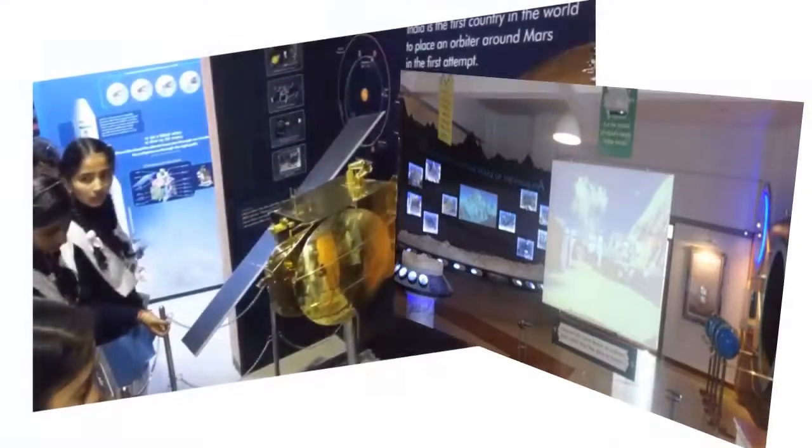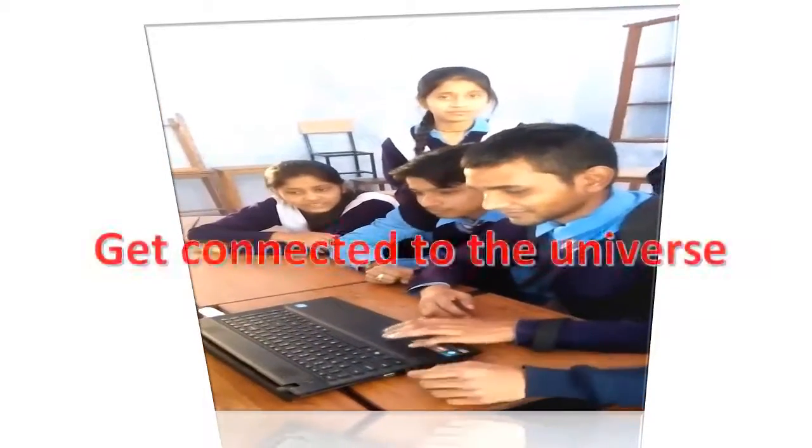Internet of Things enables the objects in our environment to become active participants. That is, they share information with other members of the network or with any other stakeholder, and they are capable of recognizing events and changes in their surroundings and acting and reacting in an appropriate manner.